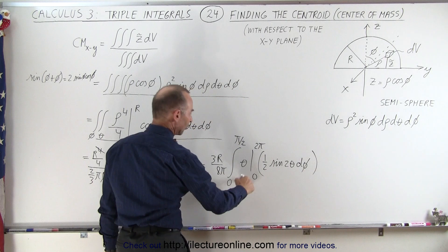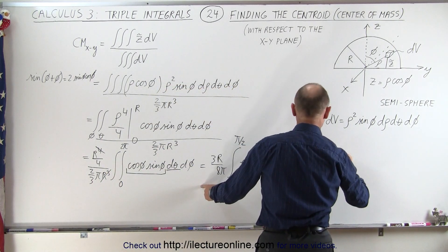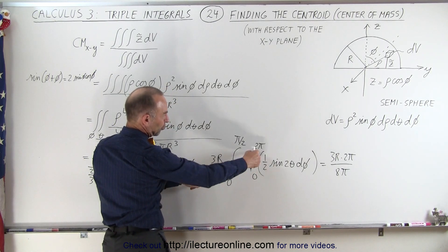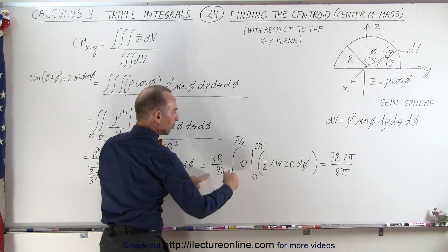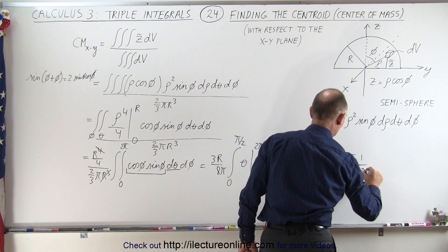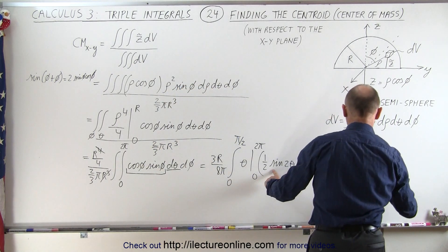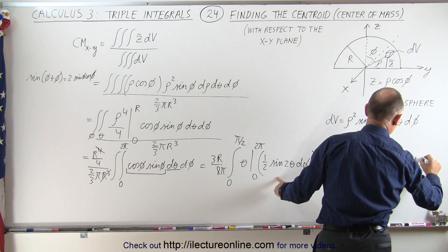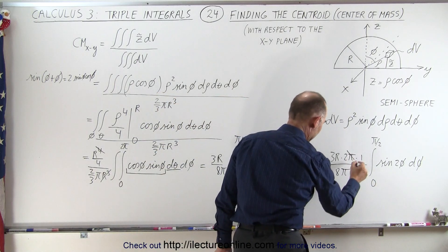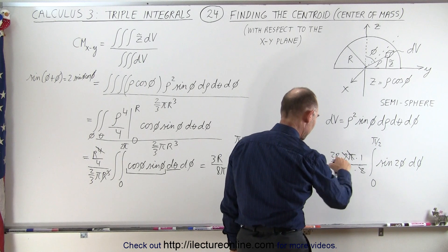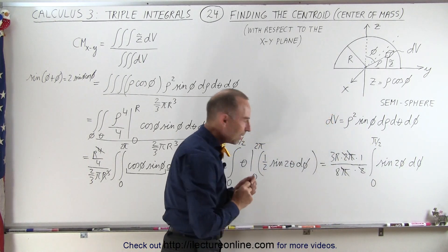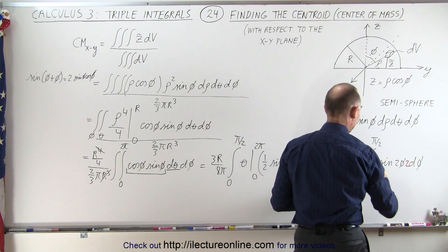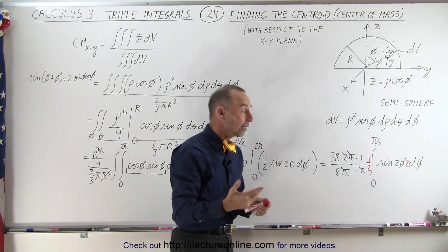The two pi from the theta integration goes to the outside, so this becomes three r times two pi divided by eight pi. The pi cancels and the two cancels, leaving three r over eight. We take the one-half out as well, and we're left with the integral from zero to pi over two of sine of two phi d phi. To integrate sine of two phi, we need a factor of two in front of d phi, so we add another one-half to compensate.